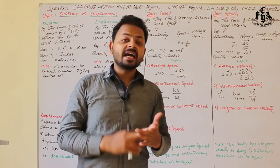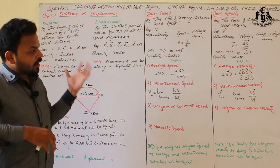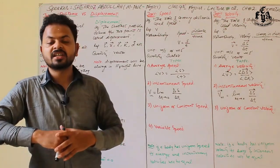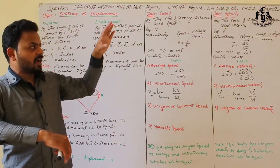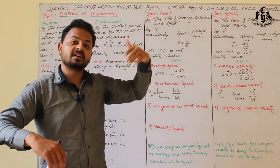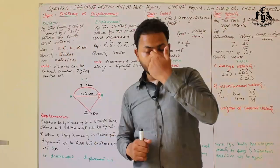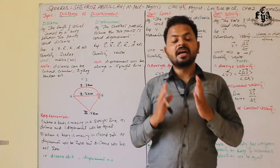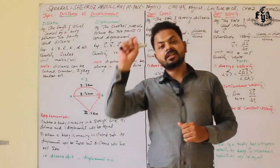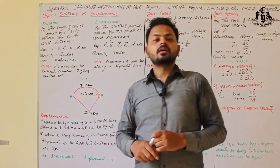First, let's understand what displacement is. Displacement is the shortest possible distance between two points. It is represented by s, r, l, k, d with an arrow above it, making it a vector quantity. Its unit is meter.